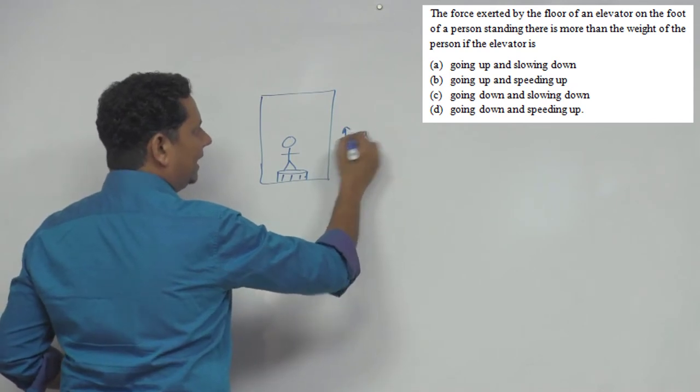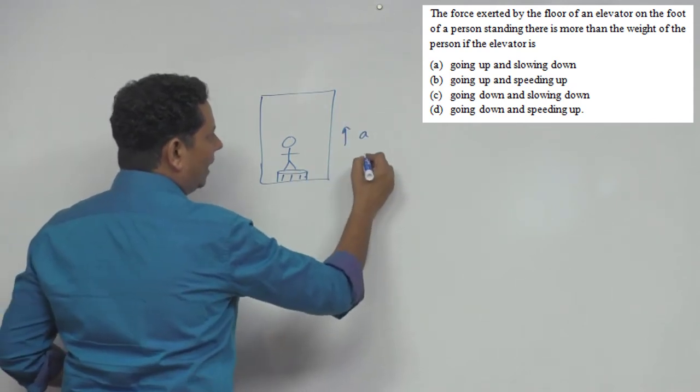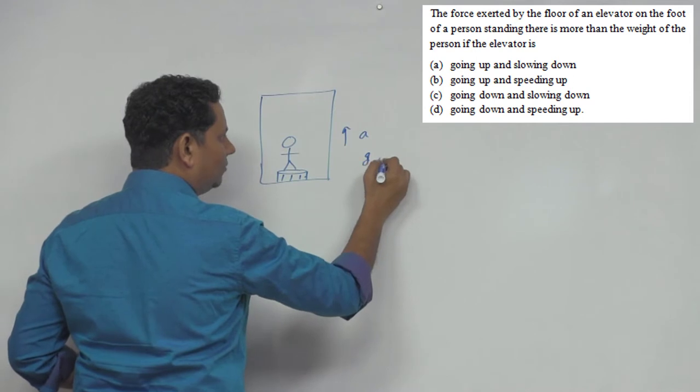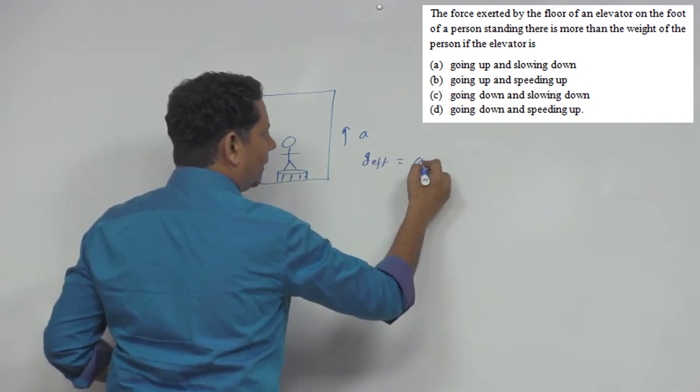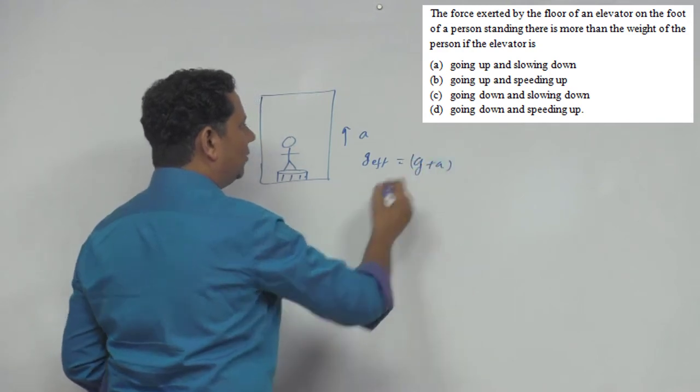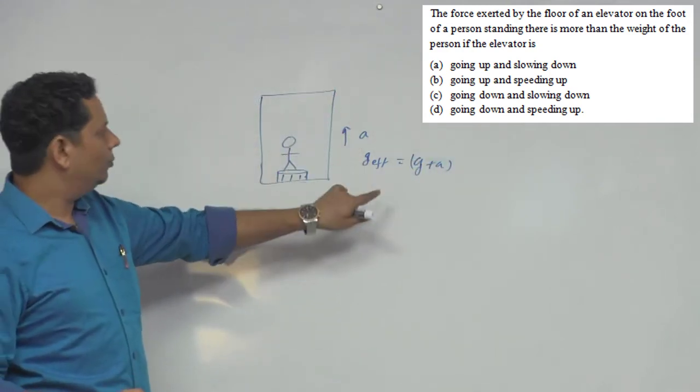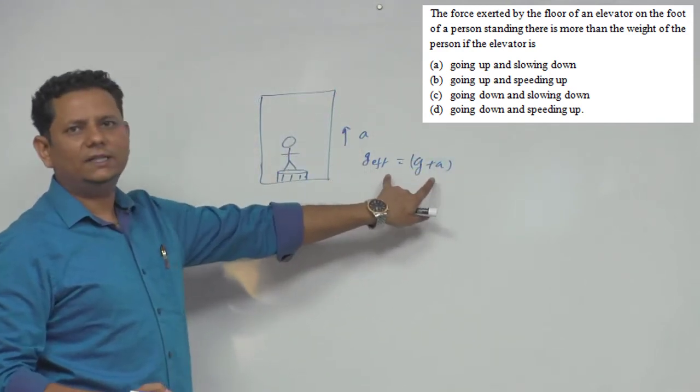If the lift has acceleration A, so in this case, the effective G we have to write as G plus A. So in this scenario, if you have acceleration A, effective G is G plus A.